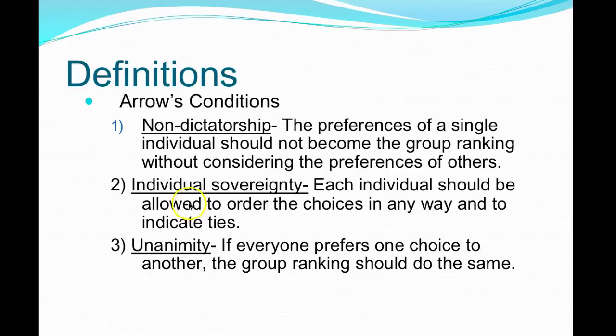Number two is individual sovereignty. Each individual should be allowed to order the choices in any way and to indicate ties. Number three is unanimity: if everyone prefers one choice to another, the group ranking should do the same — though sometimes that doesn't come true.